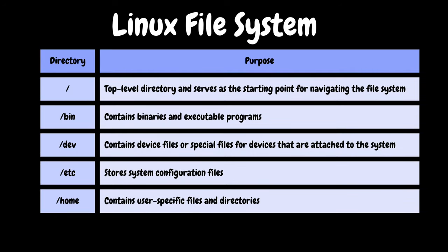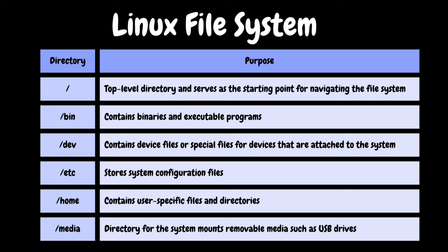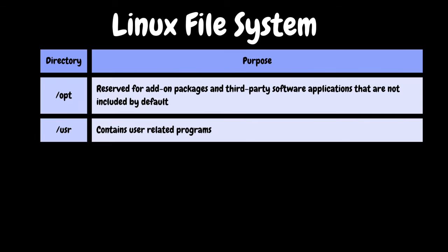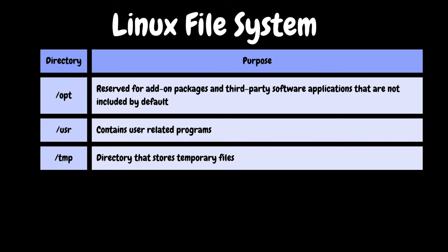The home directory contains user-specific files and directories — users can store their personal files and directories here. The media directory: when you connect removable media such as a USB disk, SD card, or DVD, a directory is automatically created under media for them, and you can access the content of the removable media from this directory. The opt directory is used for installing or storing files of third-party applications not available from the distribution's repositories. The usr directory — short for unique system resources — contains files and directories not required for basic system functionality but essential for running installed software.